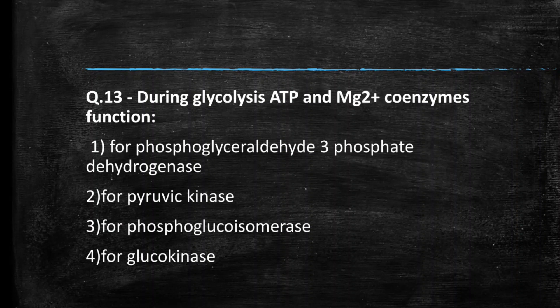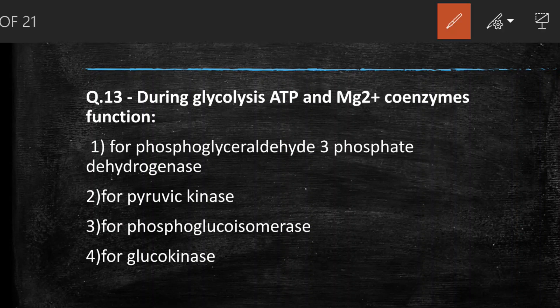Next question: during glycolysis, ATP and Mg²⁺ function as coenzymes for — (A) phosphoglyceraldehyde-3-phosphate dehydrogenase, (B) pyruvate kinase, (C) phosphoglucoisomerase, (D) glucokinase. The right answer is option D, glucokinase. Glucokinase is a type of hexokinase found only in liver cells and beta pancreatic cells and does not have any feedback inhibition by glucose-6-phosphate.